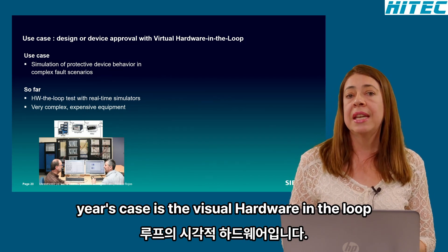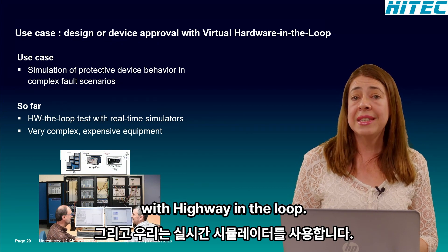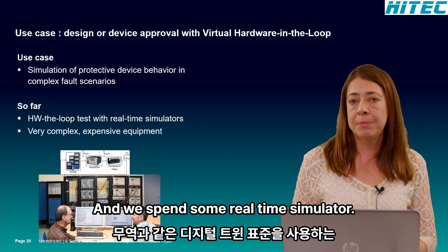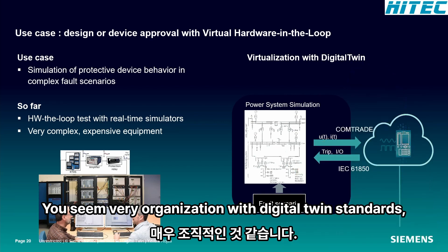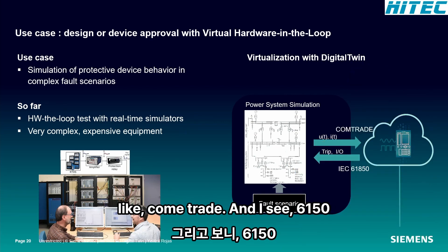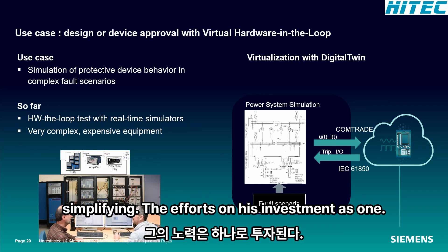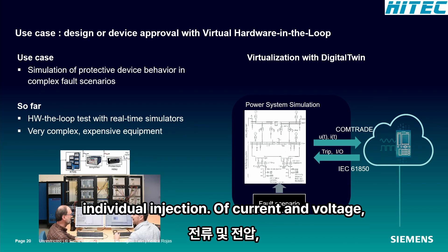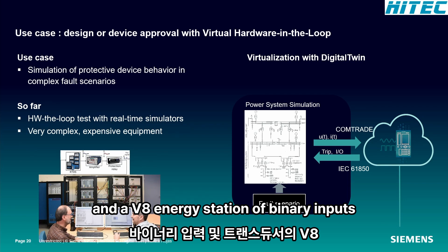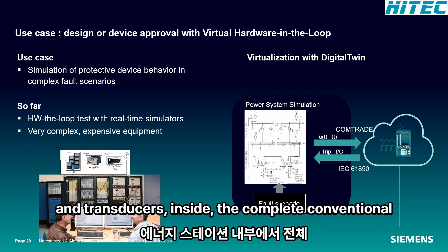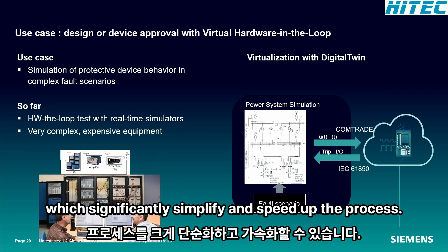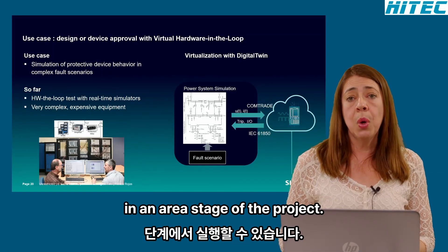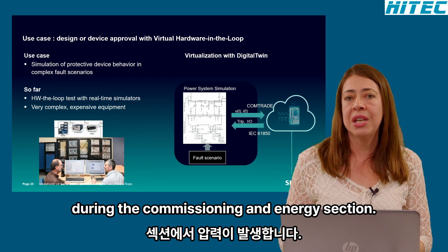The last use case is virtual hardware in the loop. Complex scenarios of protection are typically evaluated with hardware in the loop and with expensive real-time simulators. Using virtualization with the digital twin and standards like Comtrade and IEC 61850, the core simulation environment is ready, simplifying efforts and investment. Some testing equipment manufacturers, like Megger, are already working on virtual injection of current and voltage and virtual energization of binary inputs and transducers, replicating the complete conventional testing in a virtual environment. This test procedure can be run in an early stage of the project, reducing the time pressure normally experienced during commissioning and energization.